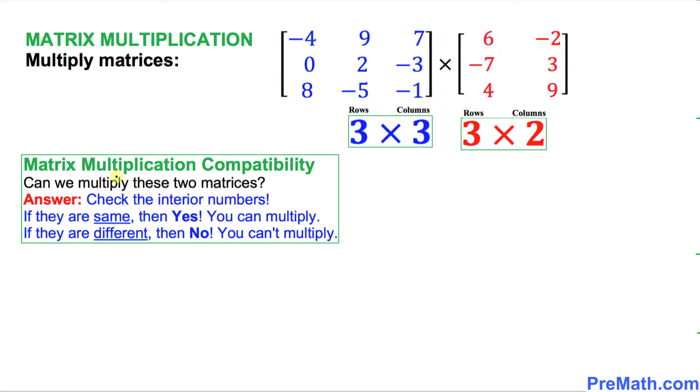Let's go ahead and check the matrix multiplication compatibility. That means can we multiply these two matrices? Always remember one thing. Check whether you can multiply or not. The answer is you look for the interior number. So the interior numbers are this one and these are two interior numbers. Just check them. See if they are same. You can see they are same. So that means yes, we can multiply them.